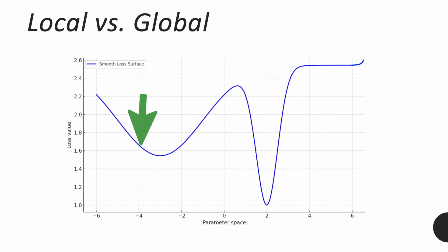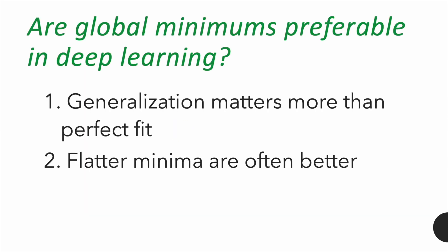And because deep learning loss surfaces are very complex, with millions of parameters, there are many local minima that work just as well as the global one. So in deep learning, global minima are not required. What we need is a good, generalizable local minimum that works well in real-world scenarios.